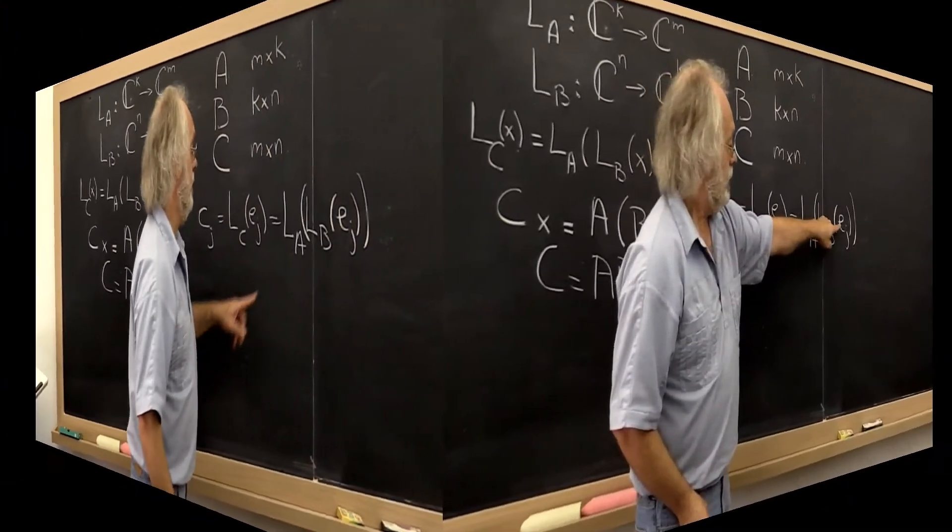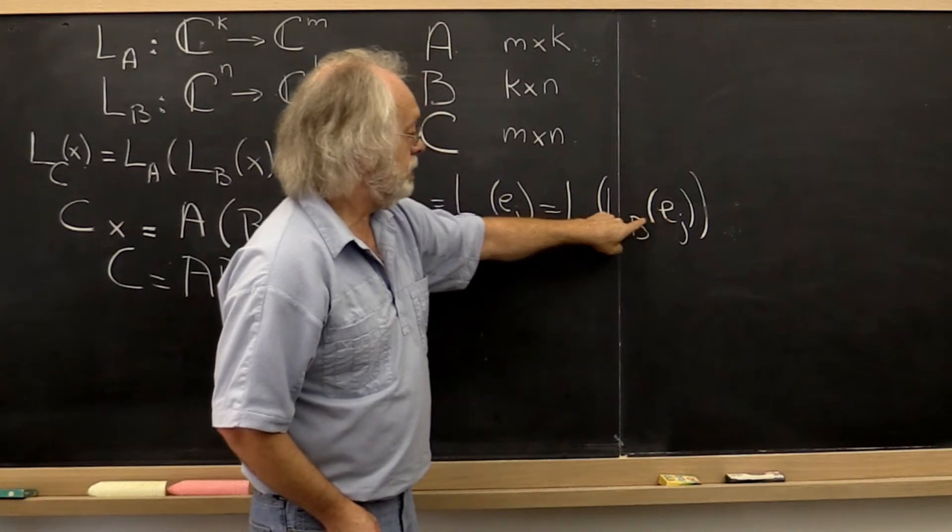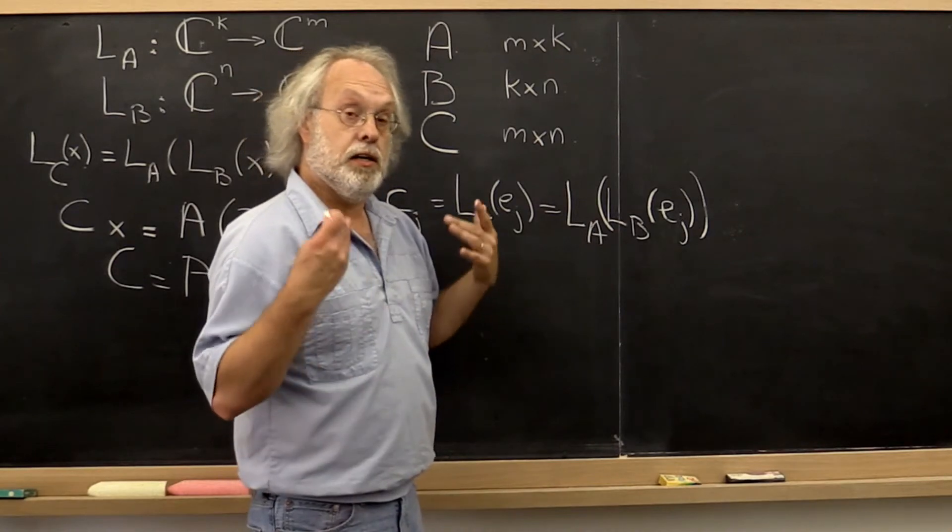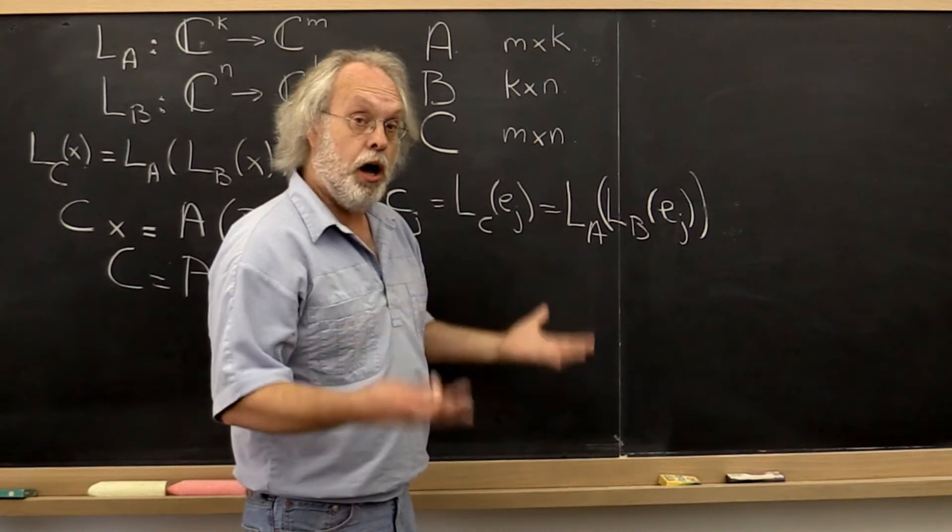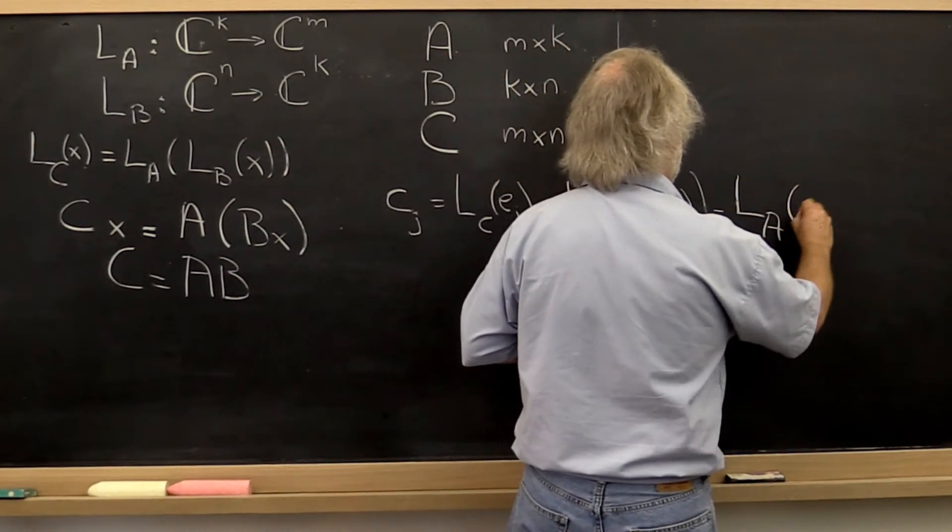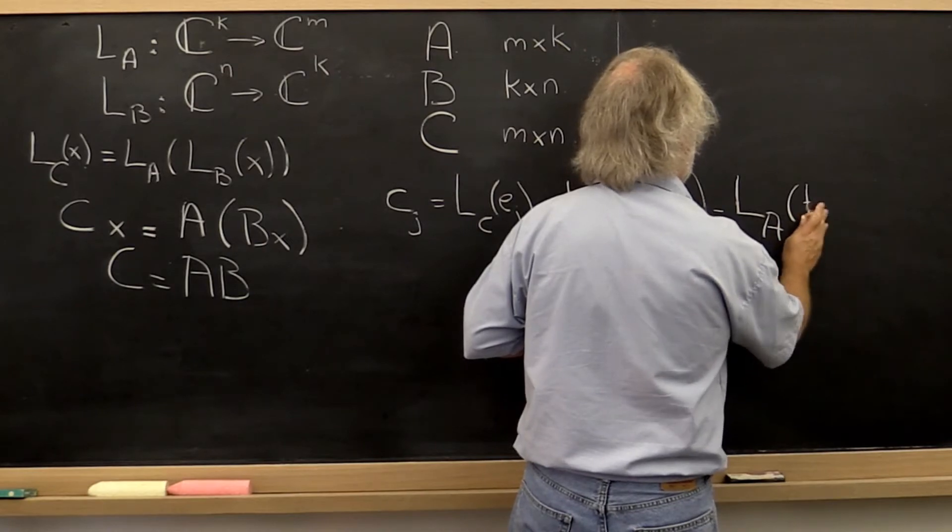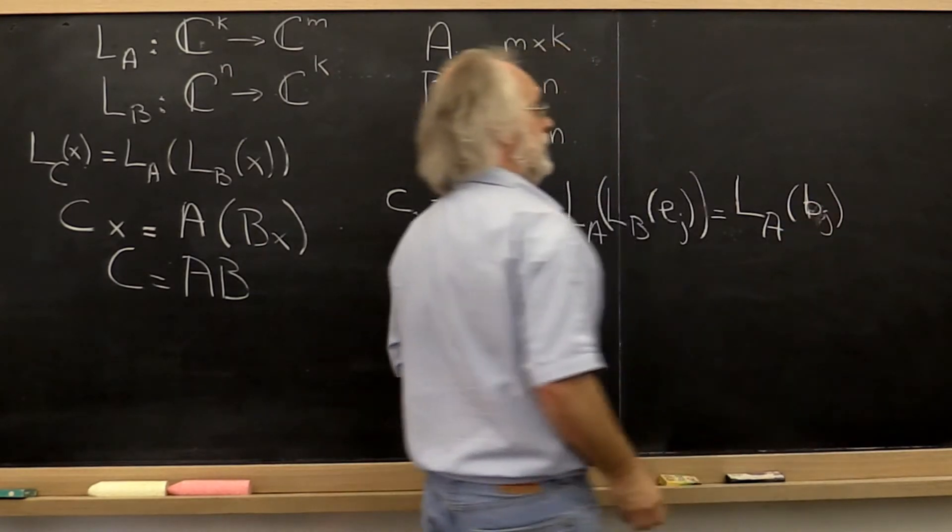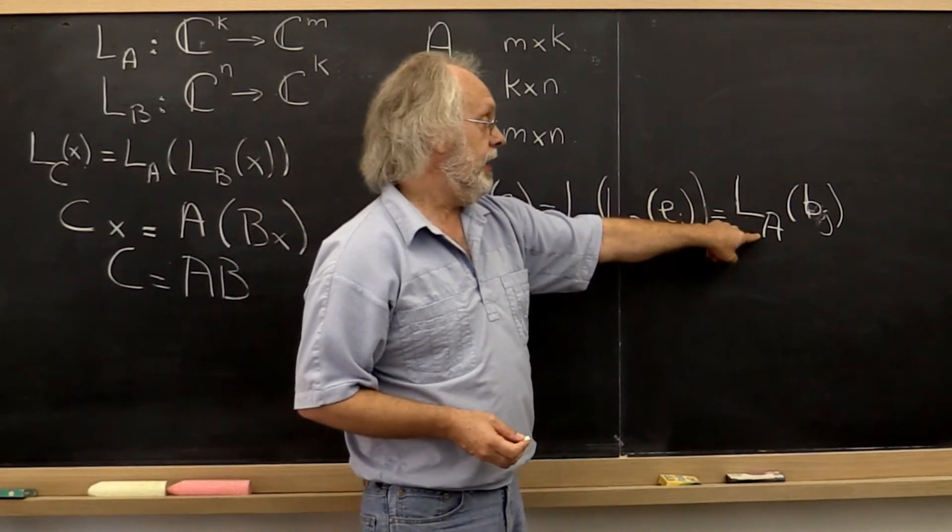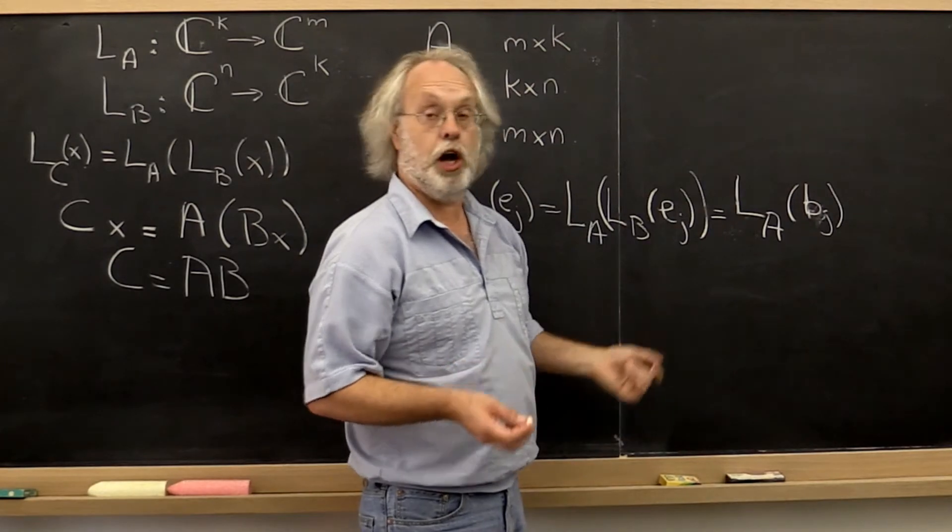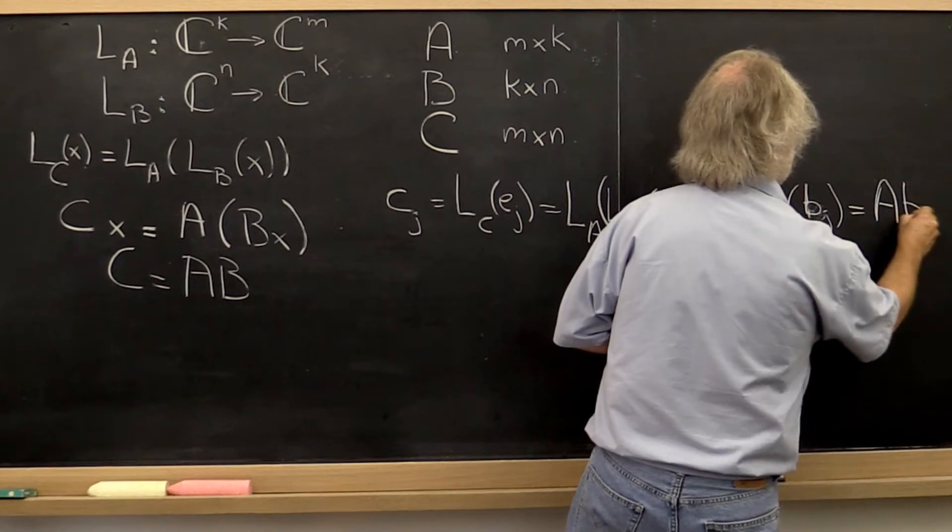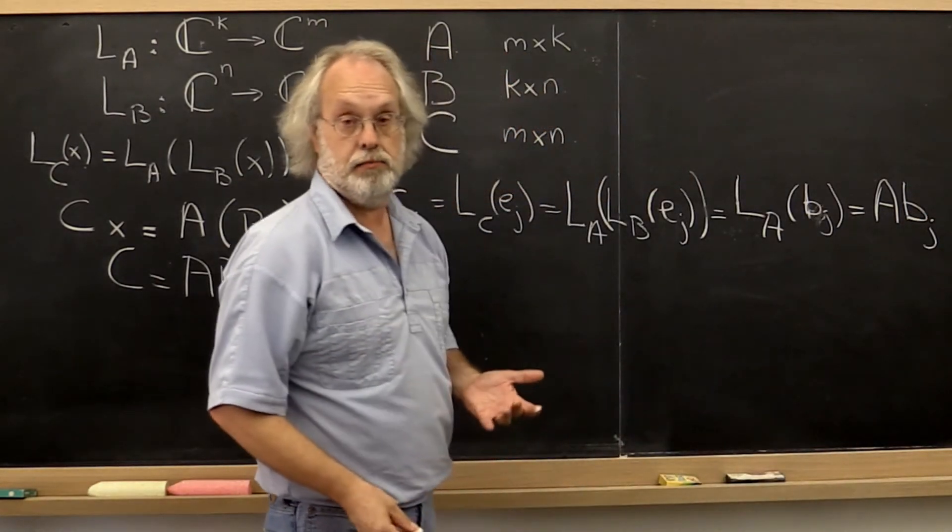Now if you put in the jth standard basis vector and you evaluate L_B, what do you get? You get the jth column of matrix B. So this here is equal to L_A applied to the jth column of matrix B. And how can we represent L_A applied to the jth column of matrix B? That is just matrix A times the jth column of B as a vector.